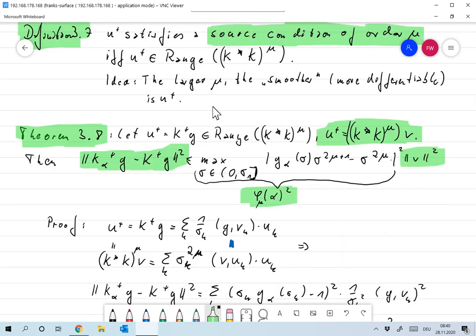Okay, now the basis for all the estimates that we will derive is theorem 3.8. And now we assume that U+ satisfies the source condition of order μ, so it can be written as U+ is K* K to the order of μ times V. And then it holds that the quantity we're interested in, the error we're interested in, K_α^+ G minus K^+ G squared can be bounded by some functions φ_μ(α) squared.